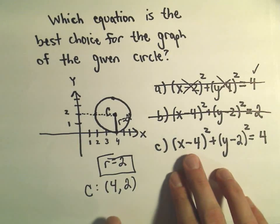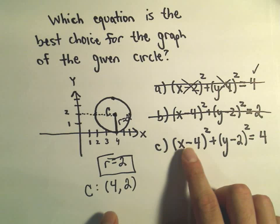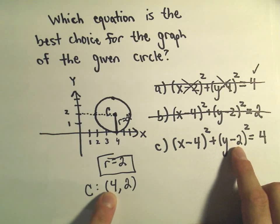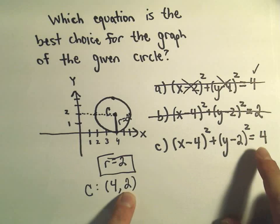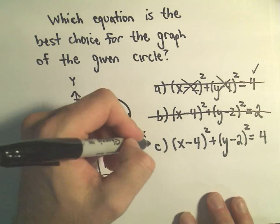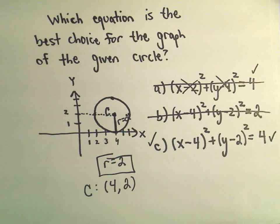Hopefully it's the last one. But notice this is correct. If we take x minus the x coordinate of where it's centered, plus y minus the y coordinate of where it's centered, squared on both of those. If we take the radius and square it, we do get 4. So, in fact, this last choice would be the correct choice for the equation of our given circle.